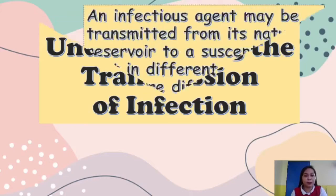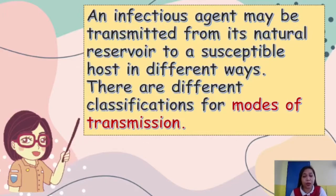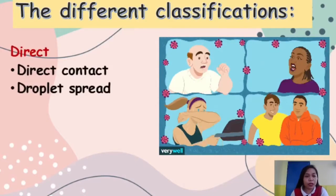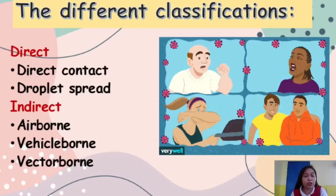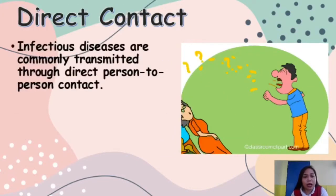An infectious agent may be transmitted from its natural reservoir to a susceptible host in different ways, and there are different classifications for modes of transmission. These can be direct — which includes direct contact and droplet spread — and indirect — which includes airborne, vehicle-borne, and vector-borne.